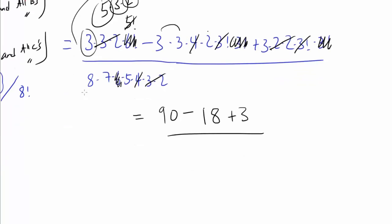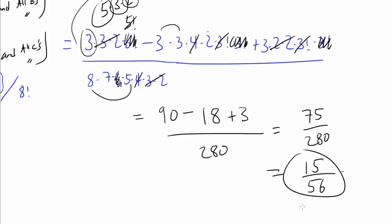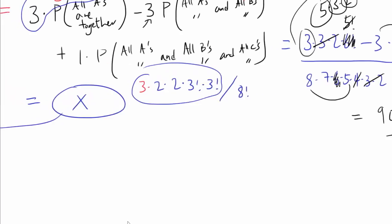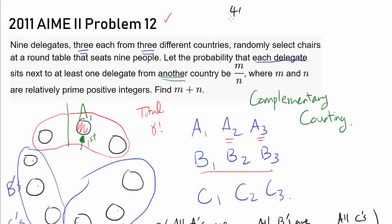Putting it all together: the numerator is 3 × 5 × 3 × 2 = 90, minus 3 × 3 × 2 = 18, plus 3, giving 75. The denominator is 8 × 7 × 5 = 280. So the probability of the complement is 75 over 280, which simplifies to 15 over 56. Therefore our final answer is 1 minus 15 over 56, which equals 41 over 56. So M plus N equals 41 plus 56, which is 97.